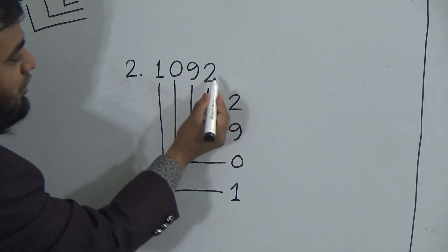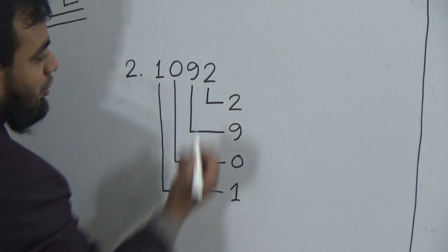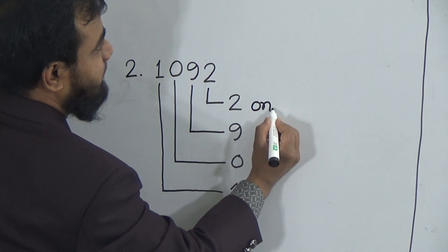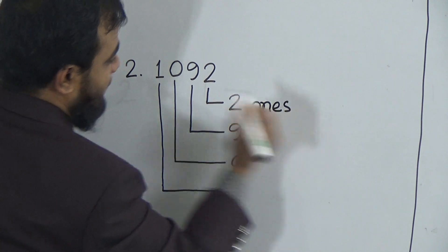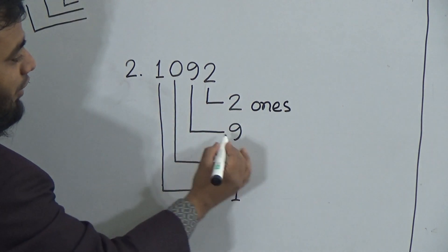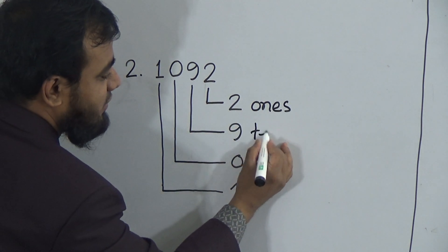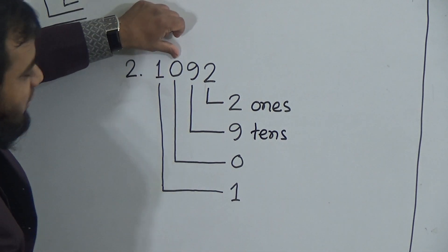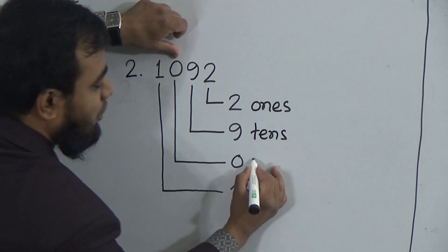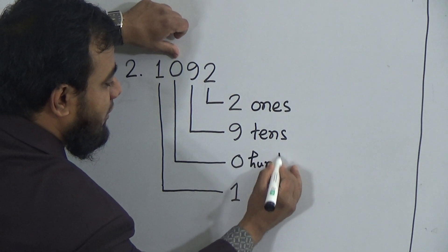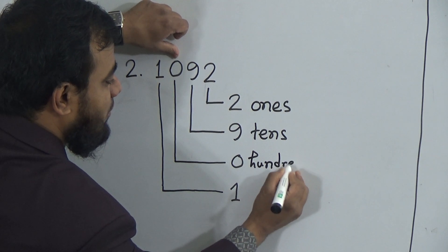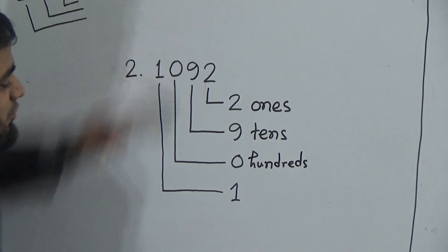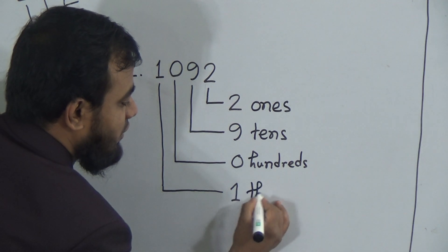Now, my dear students: this 2 is on the right side, so 2 is in the 1's place — that's 2 ones. Then 9 is in the 10's place, so 9 tens. This 0 is in the 100's place, so 0 hundreds. And this 1 is in the 1000's position, so 1 thousand.